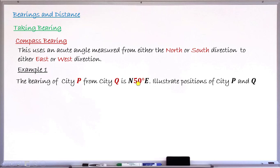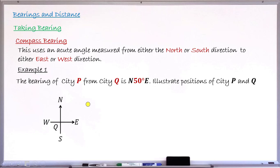The question asks us to illustrate the positions of CTP and CTQ. Since we have the bearing of CTP from CTQ, it is CTQ that we are going to mark first. So let me draw CTQ — this is my CTQ with the four major directions: north, east, south, and west.